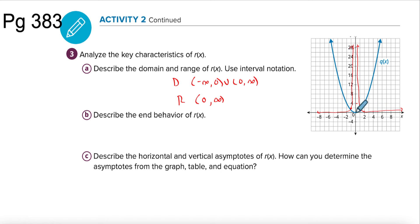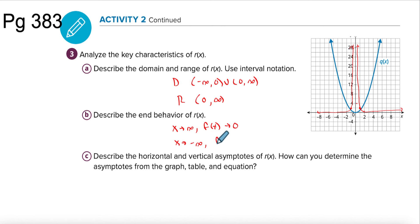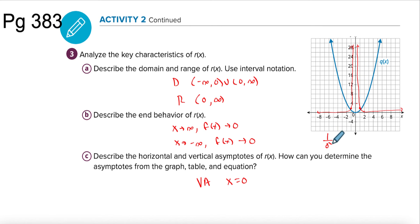There is an asymptote that cuts us off but doesn't break the range into two pieces. End behavior: as x goes to the right forever, y approaches zero. Same thing on the left — as x goes to negative infinity, y approaches zero. We have a vertical asymptote at x equals zero, which we can see clearly on the graph, and we know from the table because one over zero squared doesn't work. Our horizontal asymptote is y equals zero.